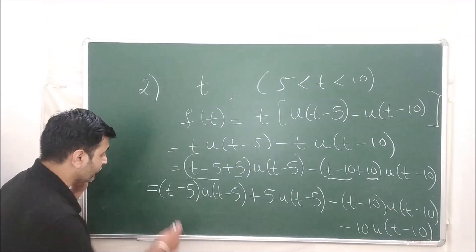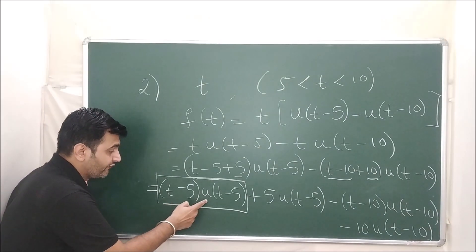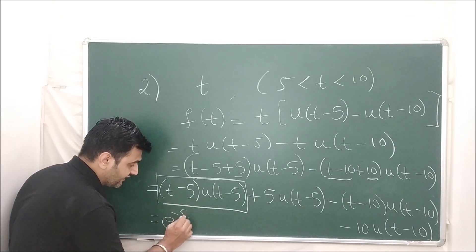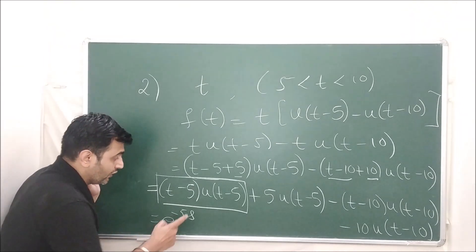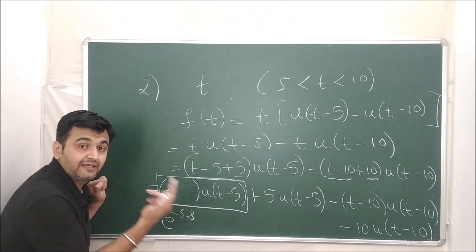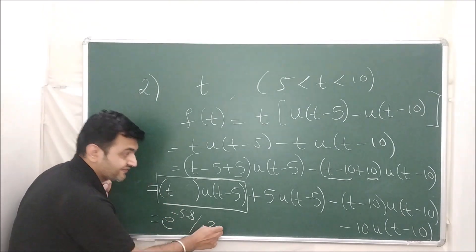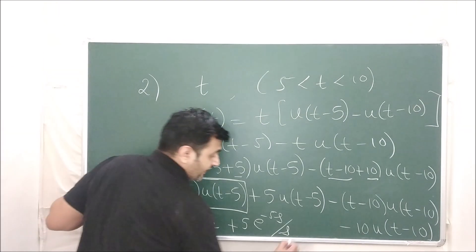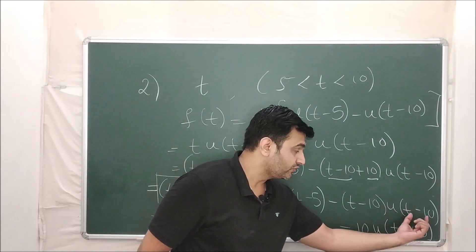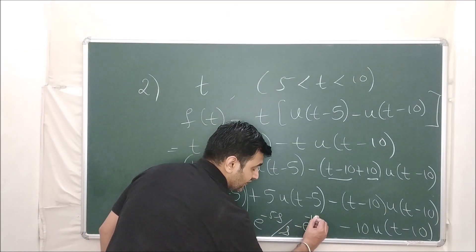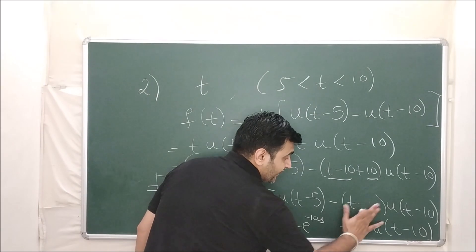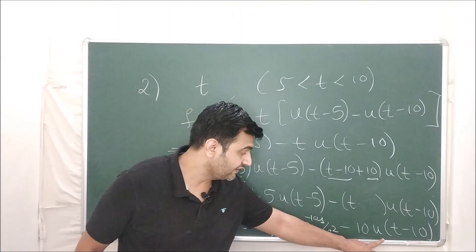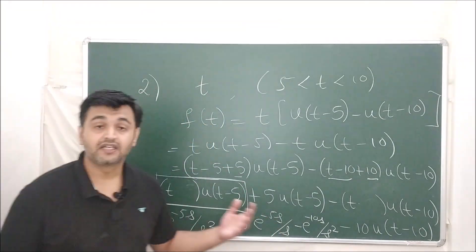Now apply Laplace. For (t − 5) · u(t − 5): a = 5, f(t) = t, L{t} = 1/s², so this gives e^(−5s)/s². For 5 · u(t − 5): Laplace of a unit step function is e^(−as)/s, so this gives 5e^(−5s)/s. For −(t − 10) · u(t − 10): a = 10, f(t) = t, giving −e^(−10s)/s². For −10 · u(t − 10): giving −10e^(−10s)/s. That's how you find the Laplace using the second shifting theorem.